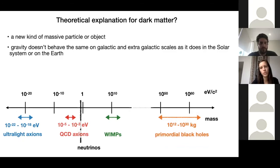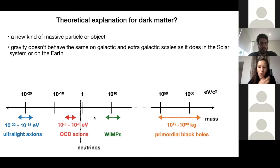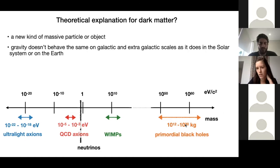On the other hand, the theoretical explanation for dark matter is still lacking. There are basically two options: the first is that there is some sort of new massive particle or object, and the second is that gravity doesn't quite behave the same on astronomical scales as it does on Earth or in the solar system. I'm going to talk about the first option — that we have some new content in the universe. If this is a massive particle, one of the most important parameters is the mass of the particle, and the possible models span a really huge parameter space.